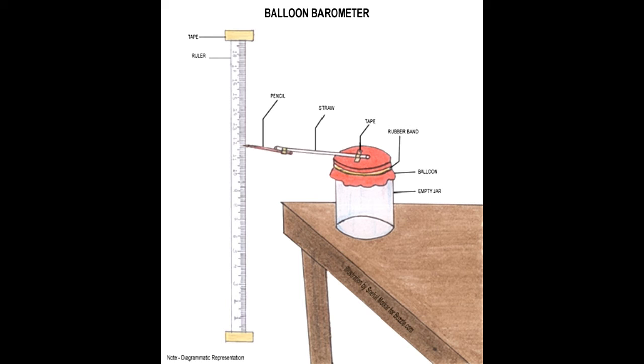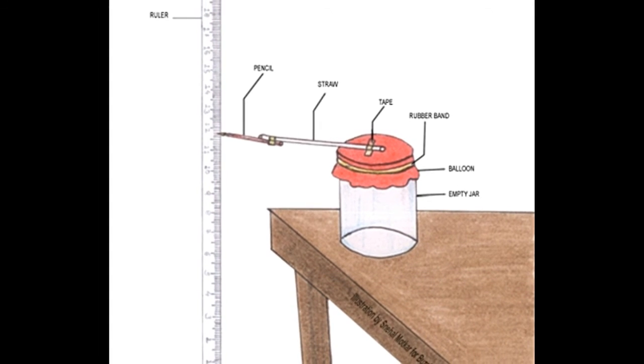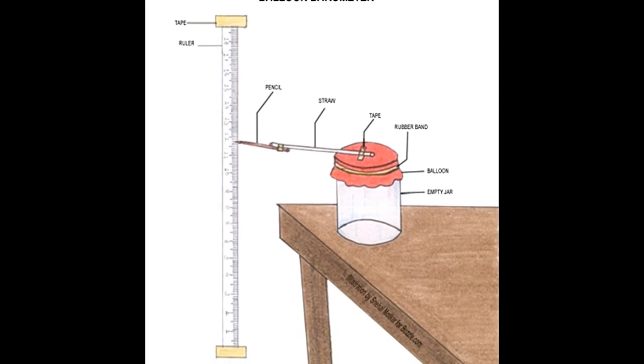Instructions: Step 1 - Blow the balloon to stretch it and release to let the air out completely. Step 2 - Cut the balloon through the middle to obtain two parts. You will need only the round portion of the balloon, so discard the neck part.